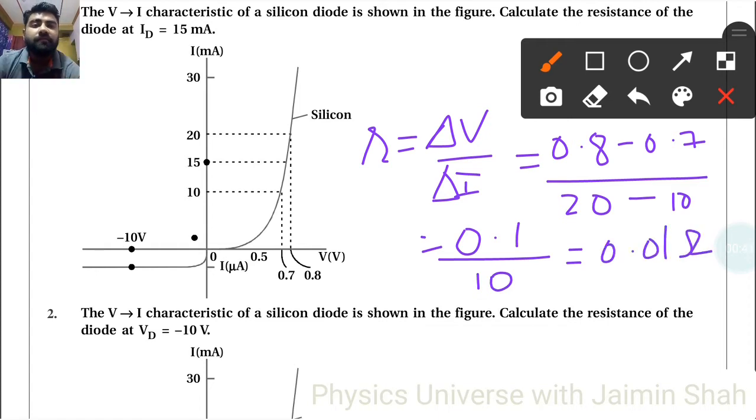Now characteristic of silicon diode is shown in figure. Calculate the resistance of the diode at VD = -10V here. So R reverse bias is equal to VD upon I.